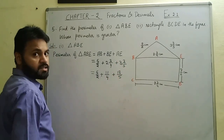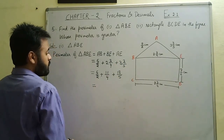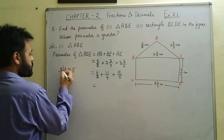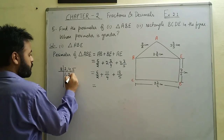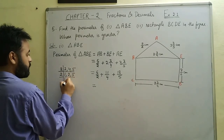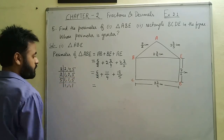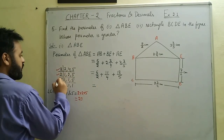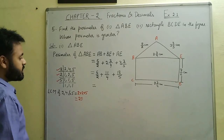We find the LCM of 2, 4, and 5. Dividing by the first prime number 2 gives 1 and 2; dividing again by 2; and then by 5. The LCM is the product of 2 × 2 × 5, which equals 20.